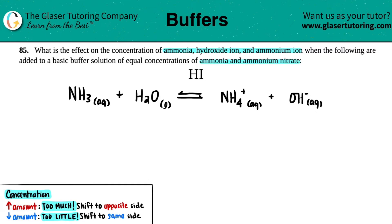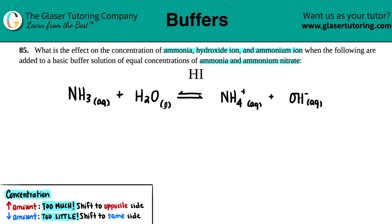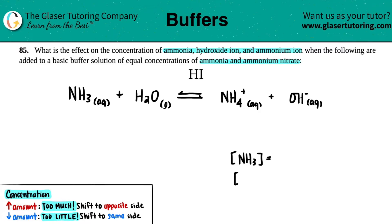We have a balanced equation already. If you need a recap as to why we're using this equation, go back to number 85A where we discuss how we get here. For this question, we need to find out what's going to happen to the concentration of ammonia (NH3), which is our starting material, the hydroxide ion (OH⁻), which is one of the products, and the ammonium ion (NH4⁺), which is also one of the products.